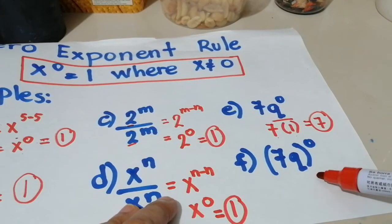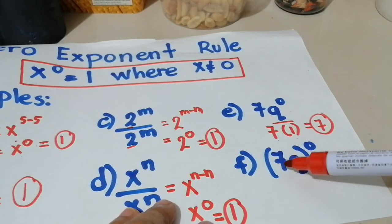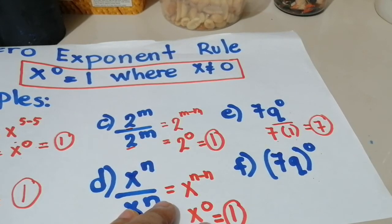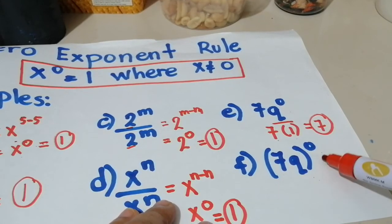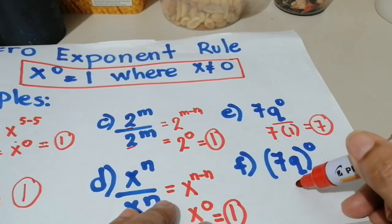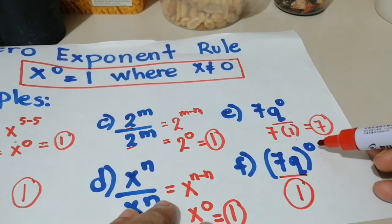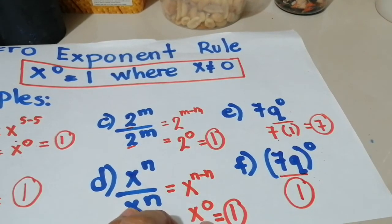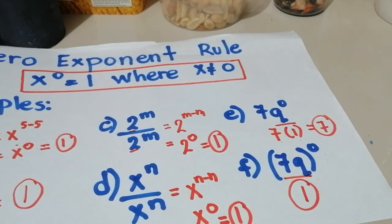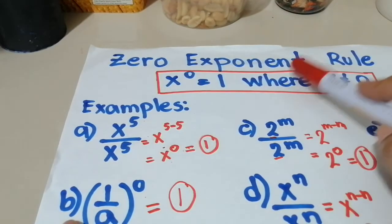Next, what if we have it this way? Kanina, ang exponent na may 0 is only the q. But this time, it's 7q, close and open parenthesis, raised to the 0 power. So dahil buong to is with the 0 exponent, meaning dahil 0 exponent siya, this whole thing here is equal to 1. This is taken as a number with 0 exponent, kaya equal to 1 siya. So that's how we simplify exponent using the 0 exponent rule.